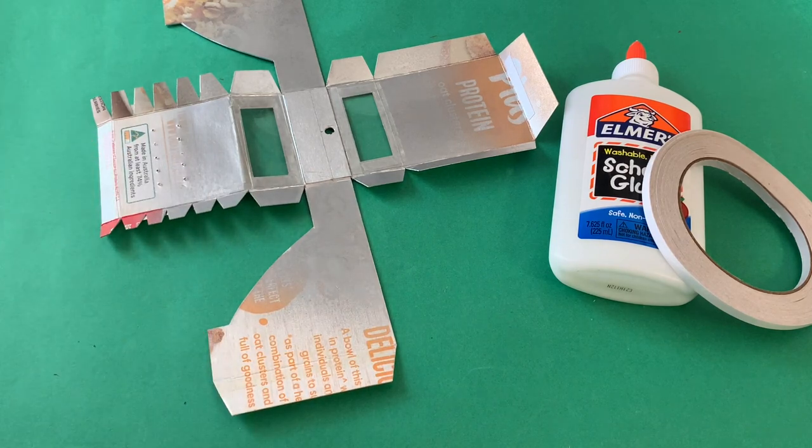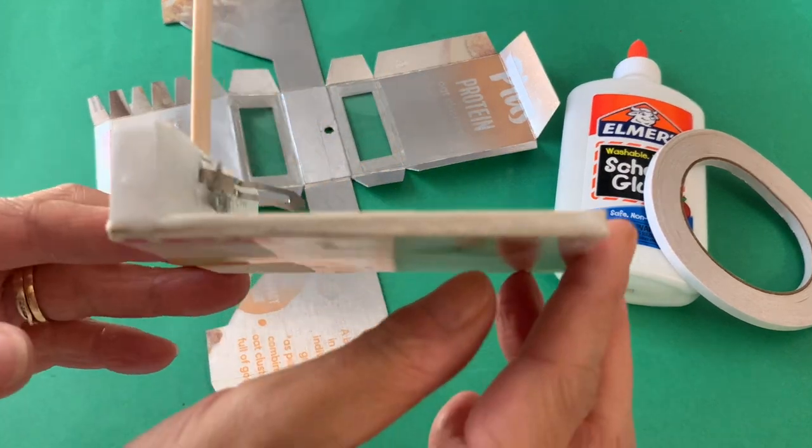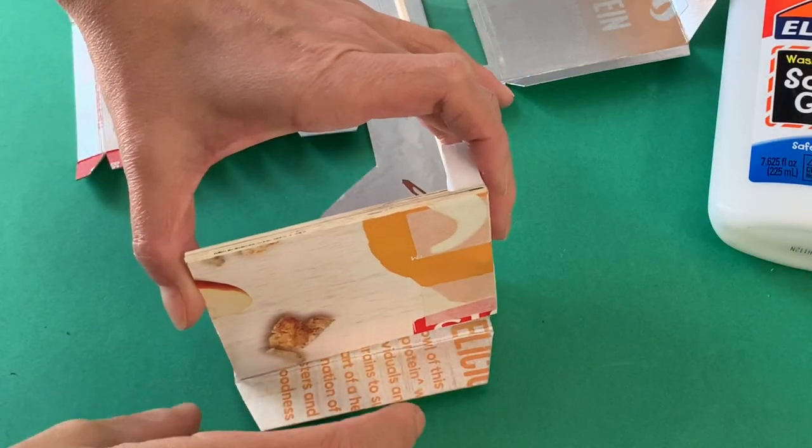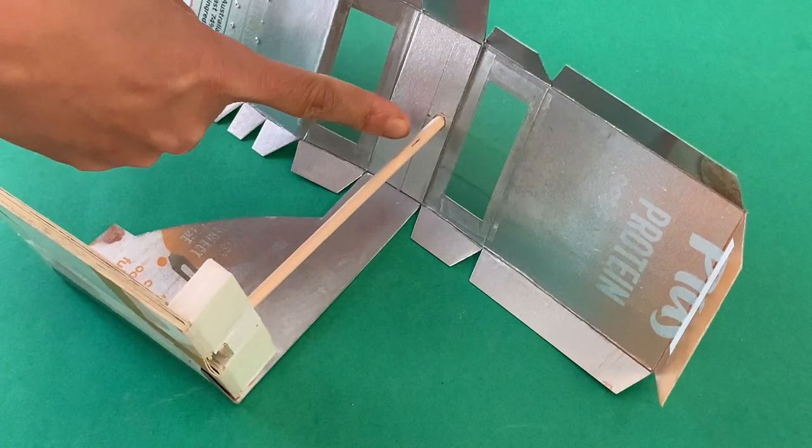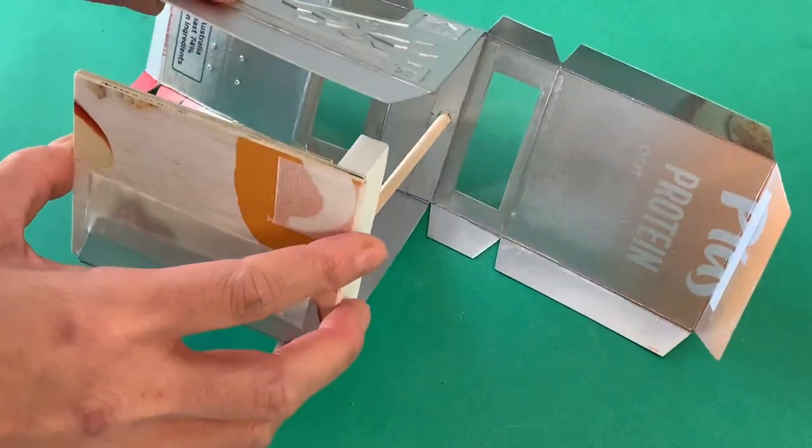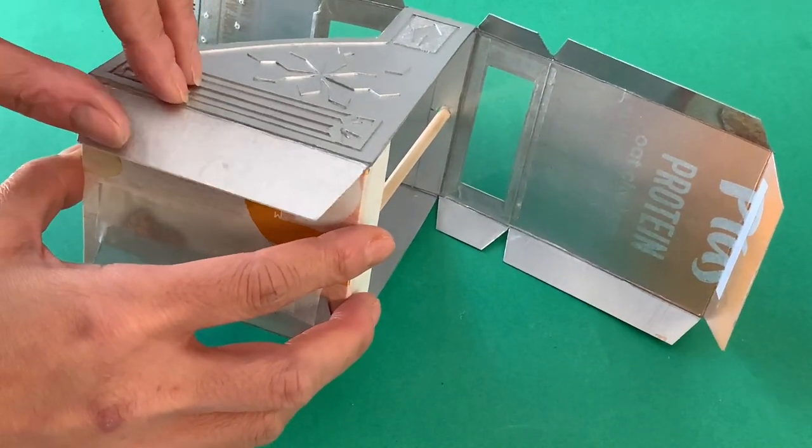Everything is ready, time to assemble the register. Start by adhering the edge of your base piece to one of the side walls. Slip the pin through the hole you punched at the top earlier, then fold over and glue the opposite wall down.